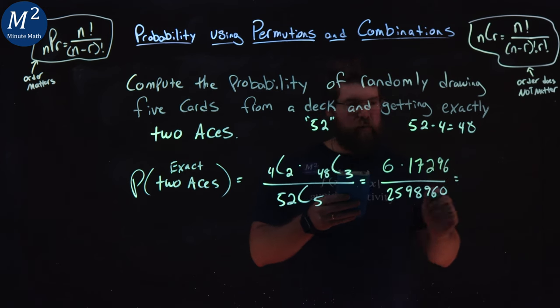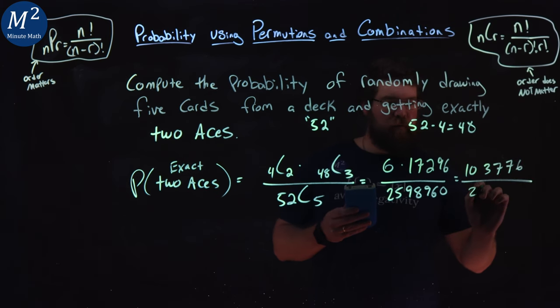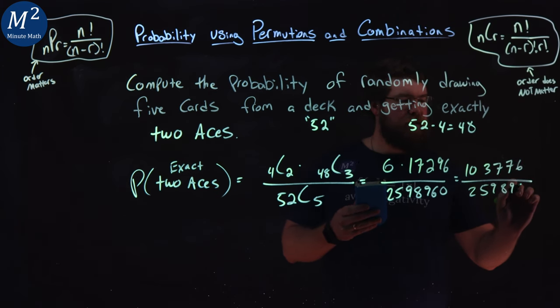Multiply that by six in the numerator, we have 103,776 over 2,598,960.